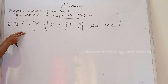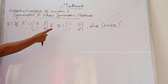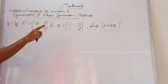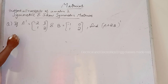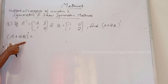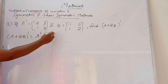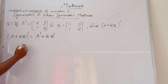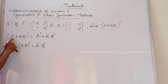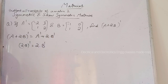Next question: if A' equals the matrix [-2, 3, 1, 2] and B equals [-1, 0, 1, 2], then find (A + 2B) the whole transpose. Using the property of transpose, we can write (A + 2B)ᵀ as A transpose plus 2 into B transpose, since (2B)ᵀ equals 2 times B transpose.